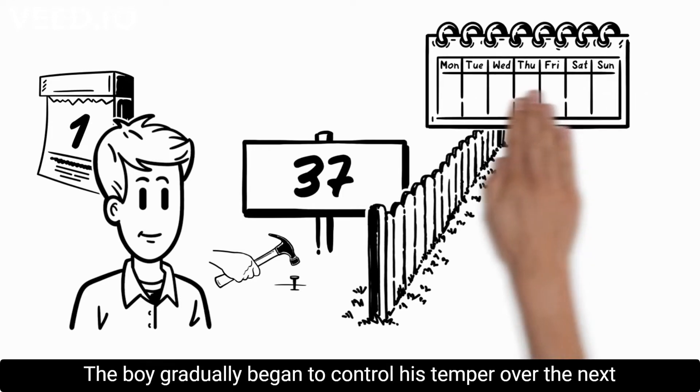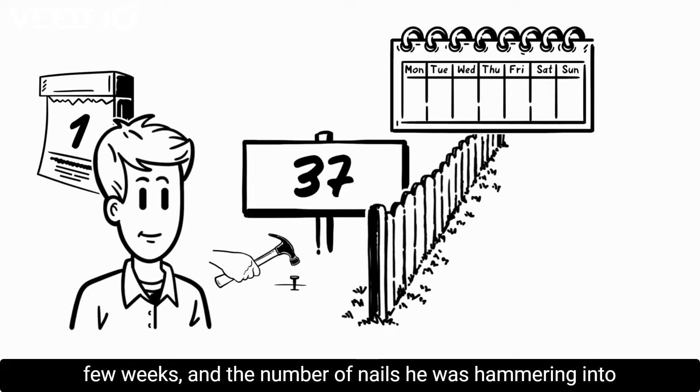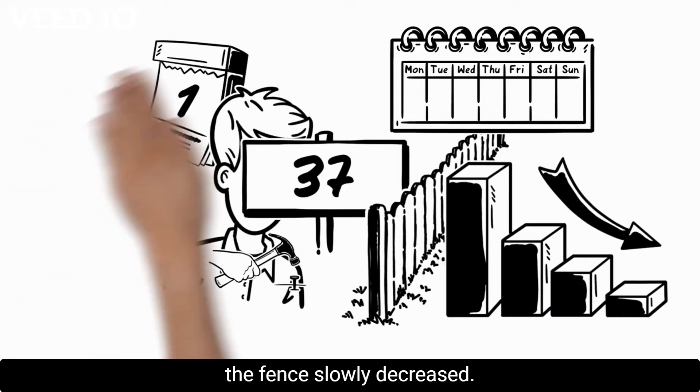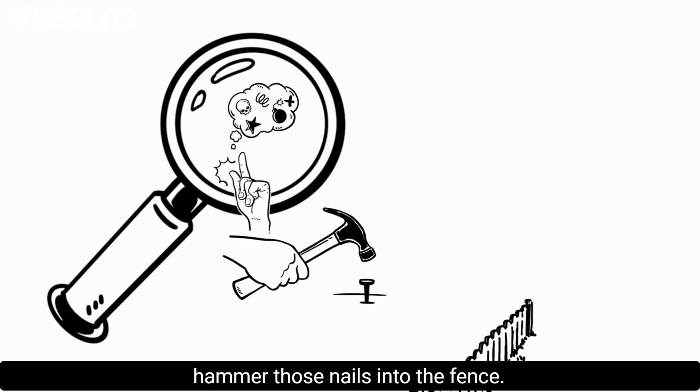The boy gradually began to control his temper over the next few weeks, and the number of nails he was hammering into the fence slowly decreased. He discovered it was easier to control his temper than to hammer those nails into the fence.